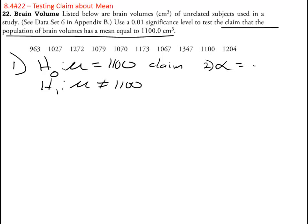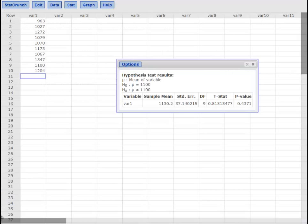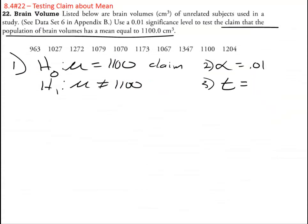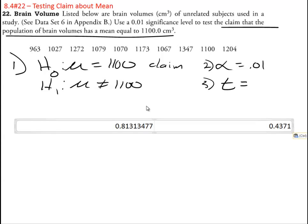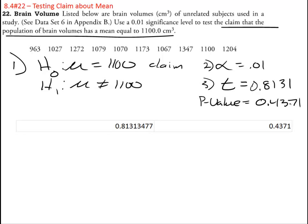Two, we have alpha is 0.01. Three, we know we're doing a t. And then when we run it we got a t of, I'll just copy this. So there is my t, 0.8131. P value 0.4371.